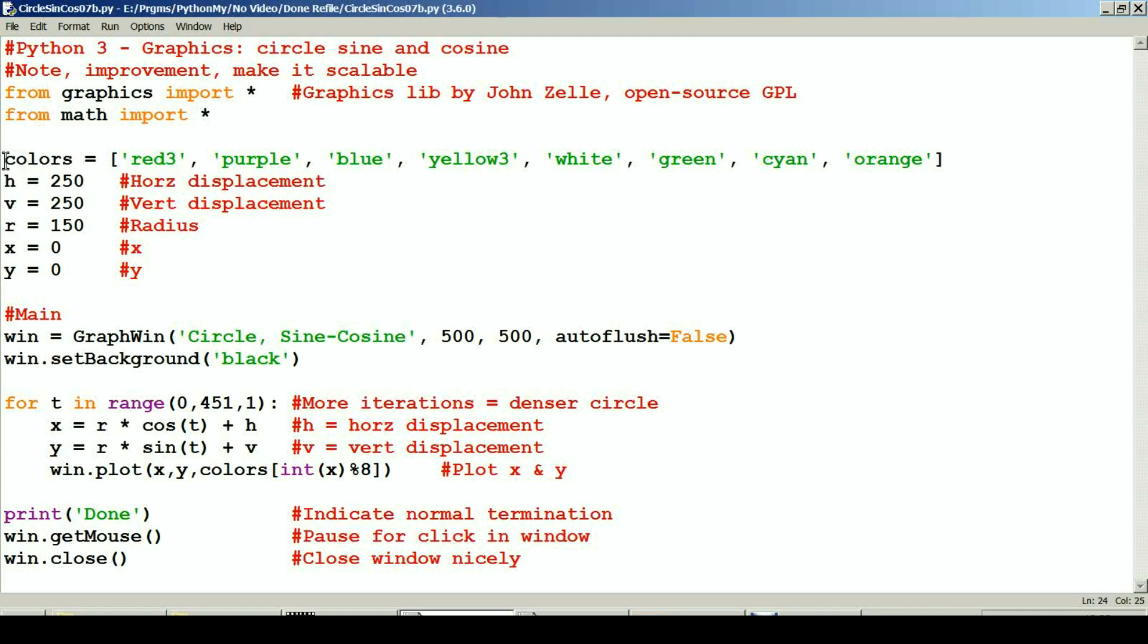The next line down here, this colors. Colors is just a bunch of colors I selected. I put them in a list so that I can create circles of different colors. And in this case, I'm going to use all these colors in my circle.